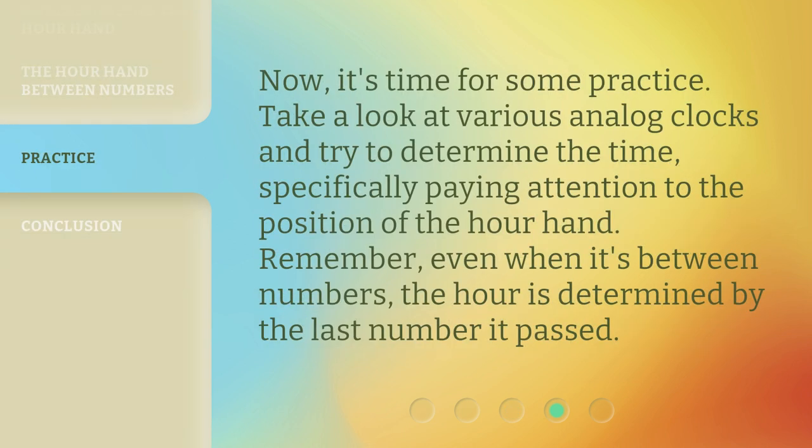Now, it's time for some practice. Take a look at various analog clocks and try to determine the time, specifically paying attention to the position of the hour hand. Remember, even when it's between numbers, the hour is determined by the last number it passed.